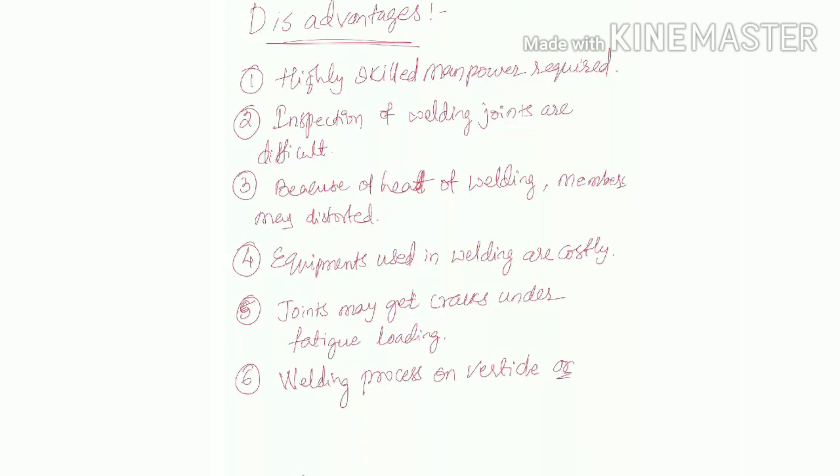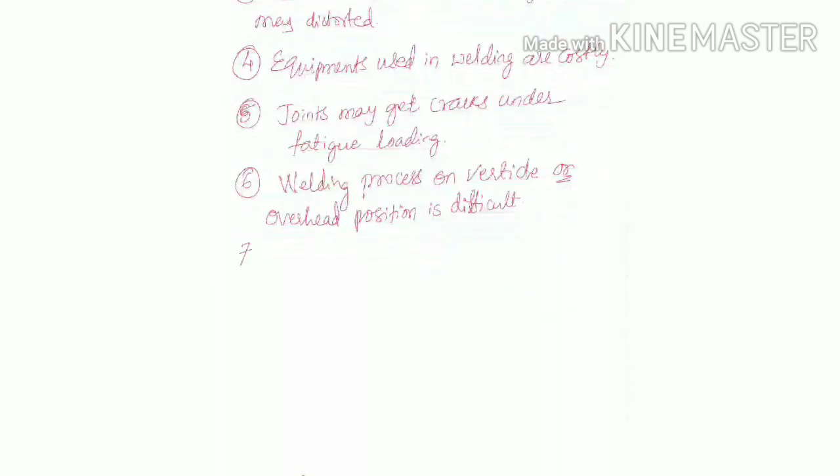It is quite difficult to weld the vertical surfaces efficiently as well as the overhead surfaces. That can't be done properly. That's why we go for factor of safety 1.25 for shop welds and 1.5 for site welds. Because of these difficulties we take higher factor of safety during site welding.